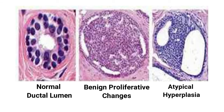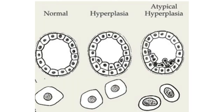This photograph shows a normal ductal unit, benign proliferative changes, and atypical hyperplasia. The first duct shows a normal ductal lumen lined by normal cells. The other duct shows benign proliferation of cells, whereas the last duct shows atypical proliferation of cells with the duct partially filled by these proliferating cells.